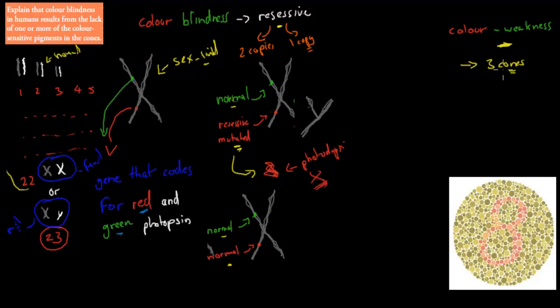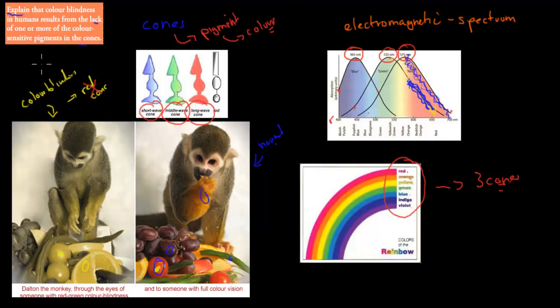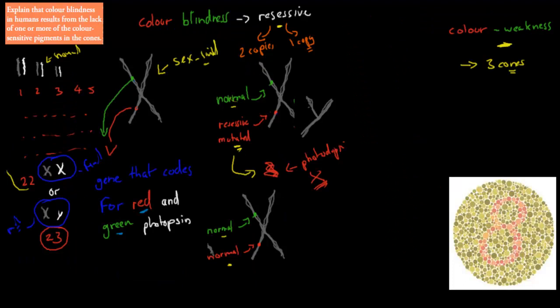People with color-weakness, they do have their three cones, but there might be a slight problem with one of their cones. For example, we said that the red cone would be able to pick up this frequency, usually. Maybe, people with color-weakness, instead of having this whole spectrum, they might only be able to pick up this spectrum. They do have that cone, but the cone is maybe not as functional as it should be, or they might not have as many of them as they should be. It's not as dramatic as color-blindness, but their sight is slightly affected. It's going to be a bit different to other people.